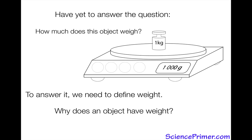Why does an object have weight? We know an object has mass because it's made of matter and mass is a measure of the amount of matter in an object. But why does it have weight?